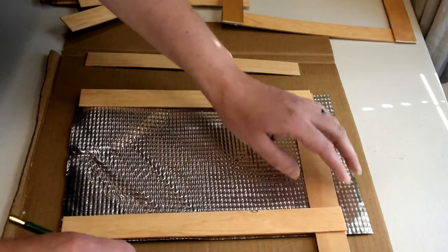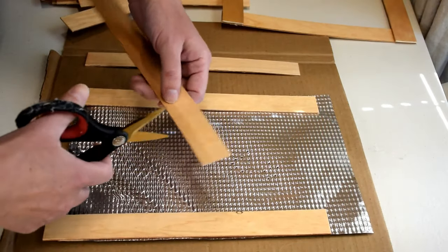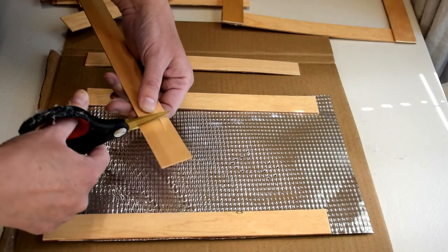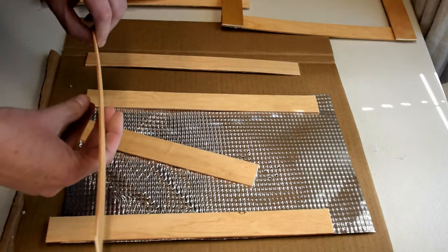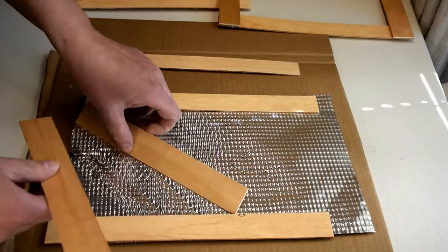Place two of the plant markers along the sides of the tray, lined up where the texture begins. You'll notice that the top and bottom pieces will need to be trimmed. Line the pieces up and use a pencil to mark where to trim them.